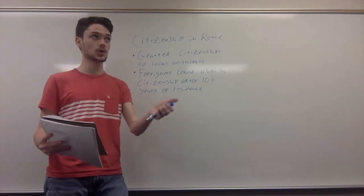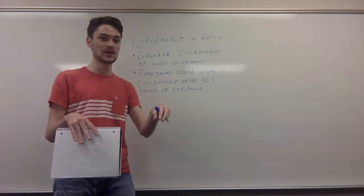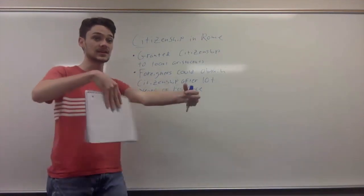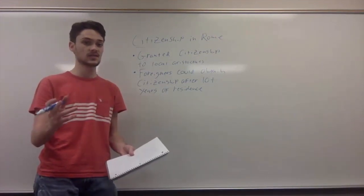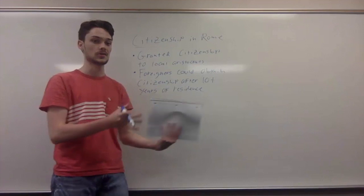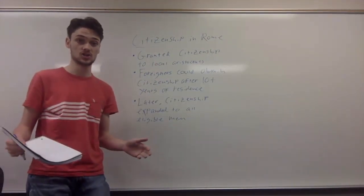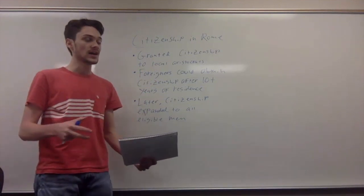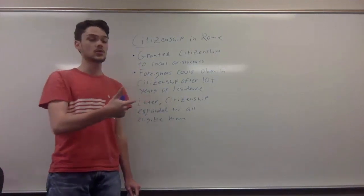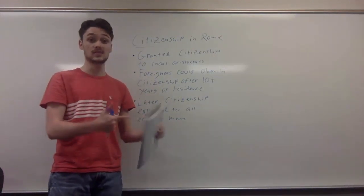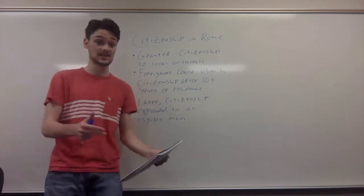And unlike the Athenian model, foreigners actually could obtain citizenship if they had been living in Rome for ten or more years. This policy mainly existed for the purpose of keeping foreign capital, money, and resources inside of Rome instead of them leaving with their owners. It is important to note, however, that foreign citizens were limited in the ways that they could contribute and participate politically. Later down the line, citizenship would be granted to all eligible men in Rome.